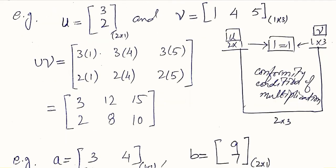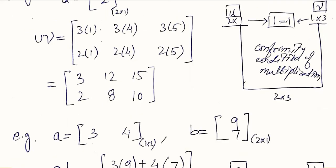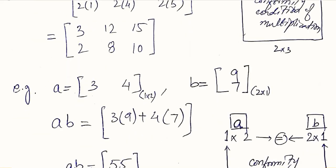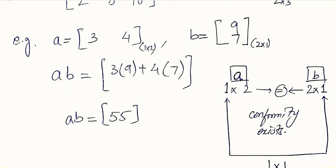Solving these products gives us the final result matrix, which is the product of vectors u and v. We verify the order: it should be two rows and three columns. Yes, there are two rows horizontally and three columns vertically, so the order is satisfied.